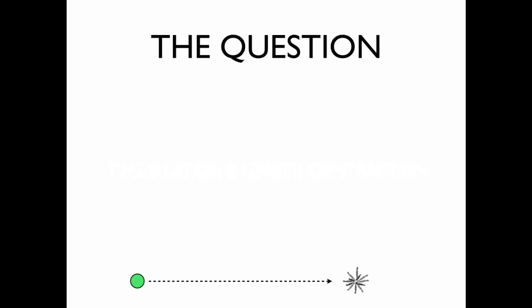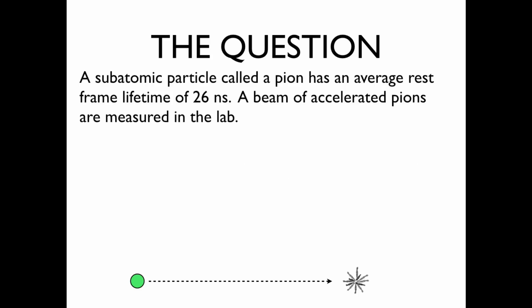The question: A subatomic particle called a pion has an average rest frame lifetime of 26 nanoseconds. Rest frame means that if the pion is sitting still and you measure how long it takes for it to decay after it's been created, it's 26 nanoseconds. A beam of accelerated pions are measured in the lab.